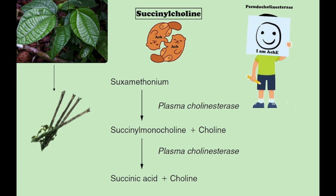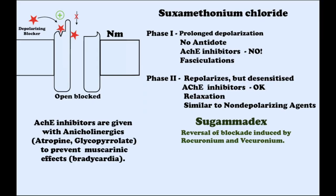Persistent depolarization produces a state of electrical inexcitability, prevents the transmission of further action potentials, resulting in muscle relaxation. Initially, this depolarization block is described as a phase 1 block. However, if further doses of suxamethonium are given, it may become a phase 2 block. The characteristics of a phase 2 block are similar to those of a non-depolarizing block, but the mechanism is thought to be different. The initial depolarization is often accompanied by twitching and fasciculations, which can be prevented by pretreatment with small doses of a non-depolarizing blocker.